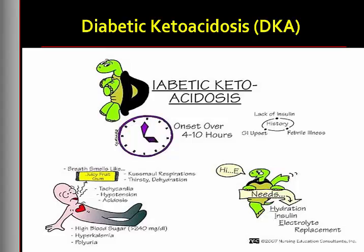Ketones are acidic byproducts of fat metabolism that can cause serious problems when they become excessive in the blood. Ketosis alters the pH balance, causing metabolic acidosis to develop. Ketonuria is the process that occurs when ketone bodies are excreted in the urine. Insulin deficiency impairs protein synthesis and causes excessive protein degradation, resulting in nitrogen losses from the tissue. Insulin deficiency also stimulates the production of glucose from amino acids in the liver, leading to further hyperglycemia.